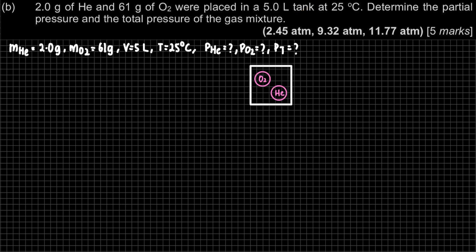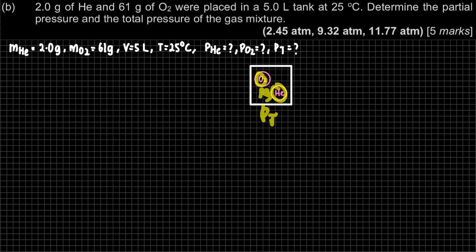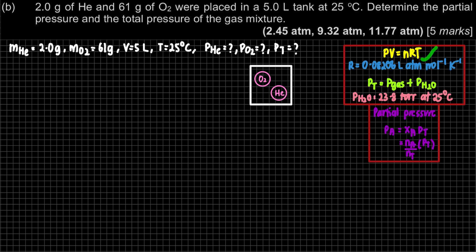First, I am going to extract all the information from the question. We have helium and oxygen placed in a 5-litre tank. We need to find the pressure of oxygen, pressure of helium, and the total pressure — then add up these two pressures. For chapter 5, specifically 5.1, there are formulas to memorize. The first formula is PV = nRT, where P is pressure, V is volume, n is number of moles, T is temperature, and R is the gas constant.